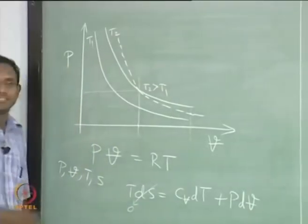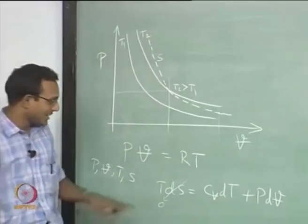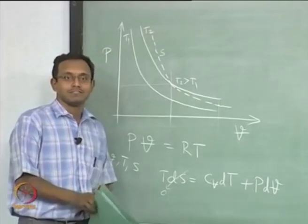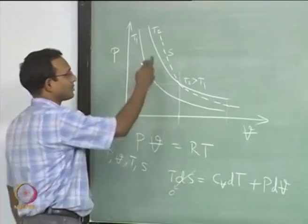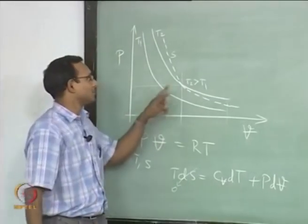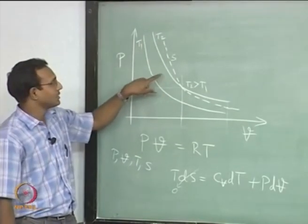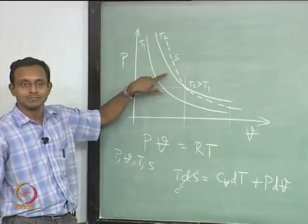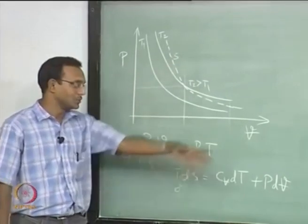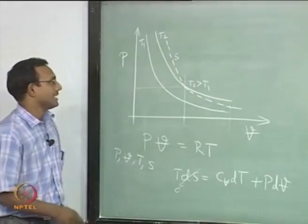The steeper dashed curve is the isentropic line S = constant, derived from setting dS = 0. So on a P-V diagram, the isentropic process line is steeper than the constant temperature line. You should be able to perform this whole exercise for any new pair of variables.